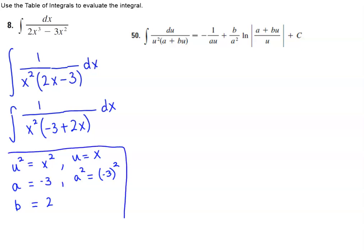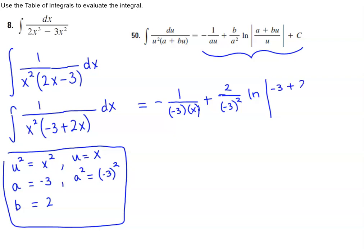So now that we know what our substitutions are, we can go ahead and use this form here. So we know that we have negative 1 over a, which is negative 3, times u, which is x, plus b, which is 2, over a squared, which is negative 3 squared, times the natural log of the absolute value of a, which is negative 3, plus b, which is 2, u is x, over x, plus c.